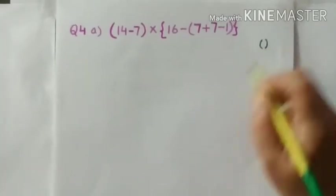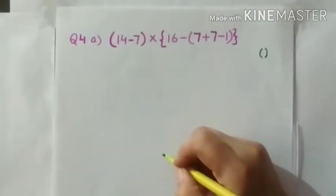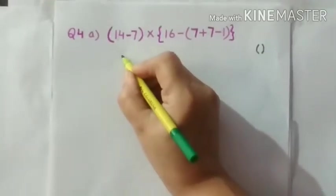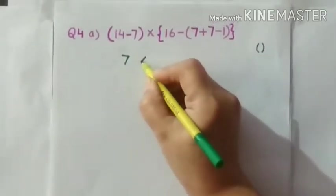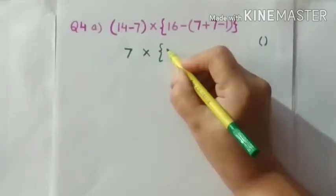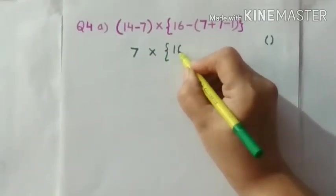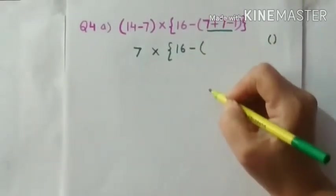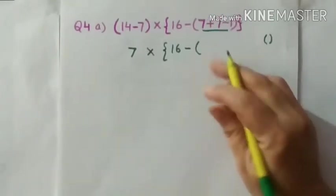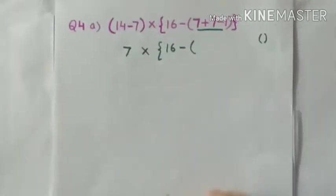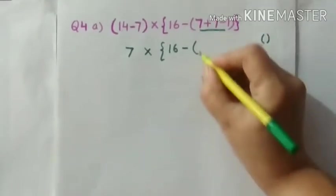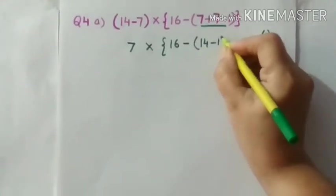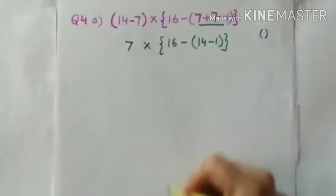You can see this small bracket. Now we can solve it in this numerical. In this small bracket we have three numbers with two operations. So we will use the BODMAS rule. We will do the addition 7 plus 7 is 14 and 14 minus 1 and then we have to copy curly bracket.